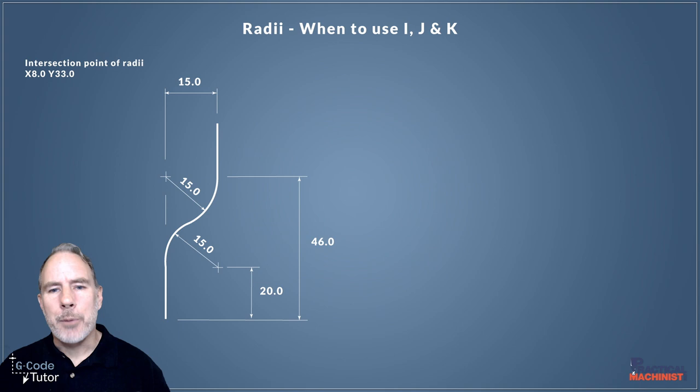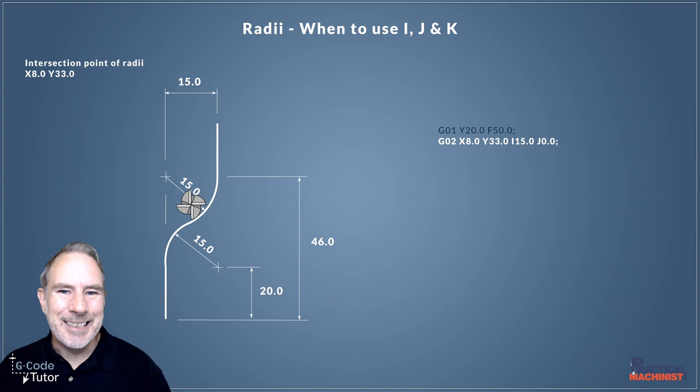That's the exact intersection point of our two radiuses there. When we're programming now, we know that intersection point. Our cutter would come up using G01 to the start position of our first radius. We're coming up in Y20 there to that start position. Then we're going to use G02 to perform our first radius there. We know the end position because that's the intersection points we just solved using trigonometry. So X and Y positions there is the same as our intersection points. It's the end point of that radius. We use an I and J to designate the center point of that first radius there.